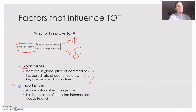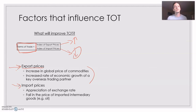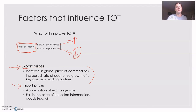This is the key part of the information. The thing that will influence the terms of trade is export prices and import prices, and you've got to know which way they've got to go to have a particular effect on the terms of trade.